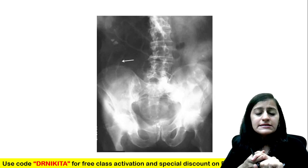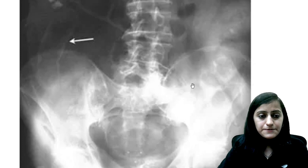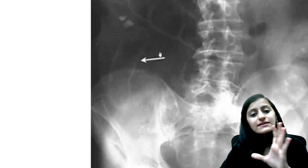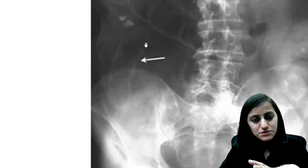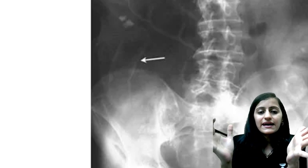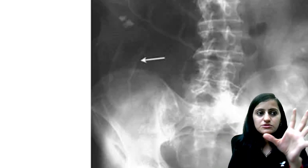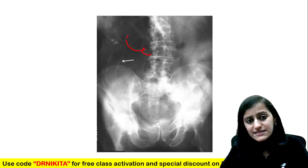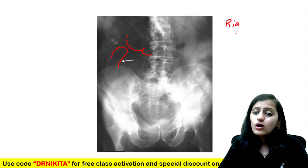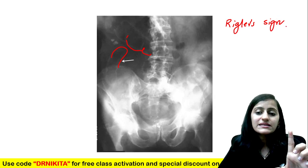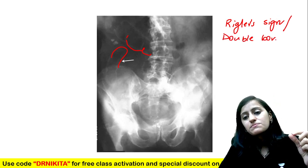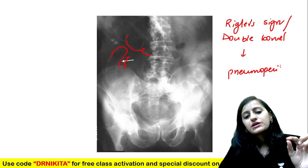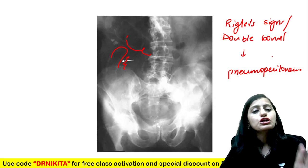In the next image, what is prominent is that you can see the bowel wall very clearly — there is air inside and also air outside the bowel loop. Air inside is black, air outside is black, and in the middle the white bowel wall stands out. Whenever you see this very distinct bowel wall appearance, this is called the Rigler sign, also known as the double bowel wall sign. This is suggestive of air outside the bowel — that is pneumoperitoneum. This is an important sign of pneumoperitoneum.